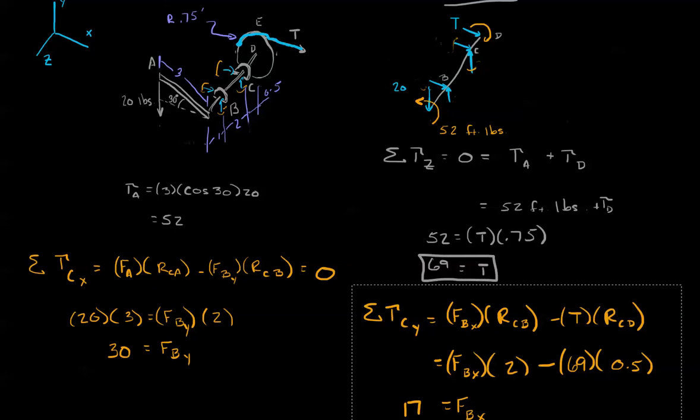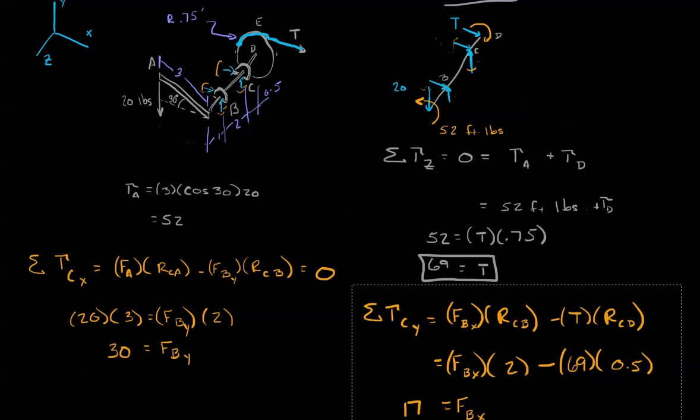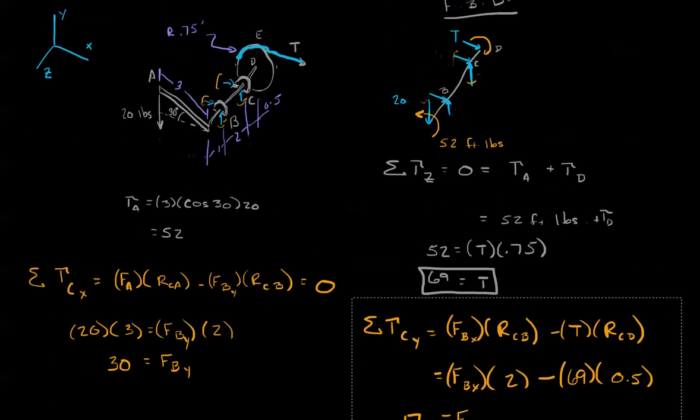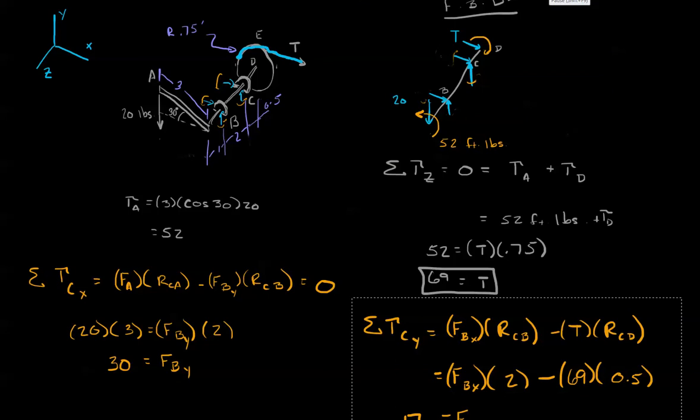Now, that said, how are we going to find the reaction forces at C? Well, it's actually a lot simpler than this. We could go back through and do all that where we sum the torques about B in the x and y directions, or we could just sum the forces in the x and y directions. Let's see what that looks like.